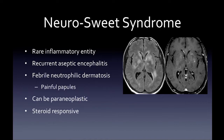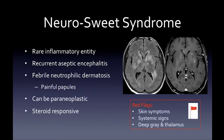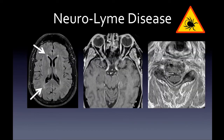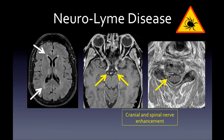Neurosweet syndrome is a rare zebra MS mimic — a rare inflammatory entity characterized by recurrent aseptic encephalitis and febrile neutrophilic dermatosis. Patients develop painful papules. It can be secondary and paraneoplastic, and it is steroid-responsive. Red flags: skin symptoms, systemic signs, and deep gray matter and thalamic lesions.